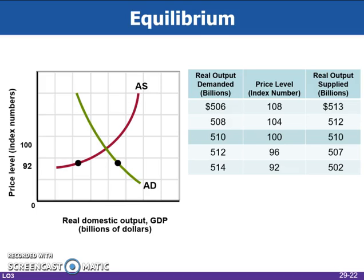This figure shows the equilibrium price level and equilibrium real GDP. The intersection of the aggregate demand curve and the aggregate supply curve determines the economy's equilibrium price level. At the equilibrium price level of 100, which is in index value terms, the $510 billion of real output demanded matches the $510 billion of real output supplied. So the equilibrium GDP is $510 billion.